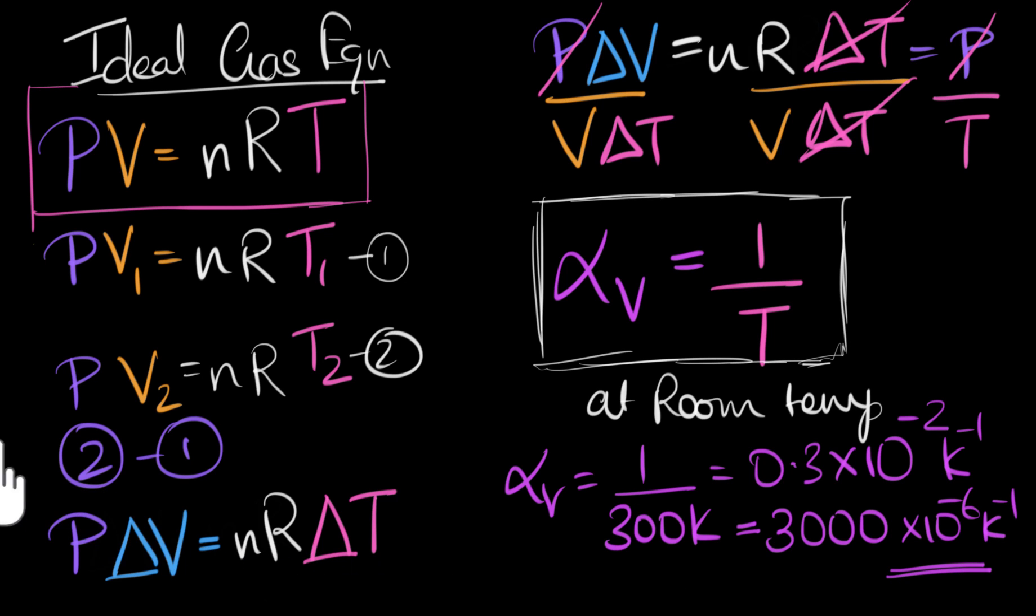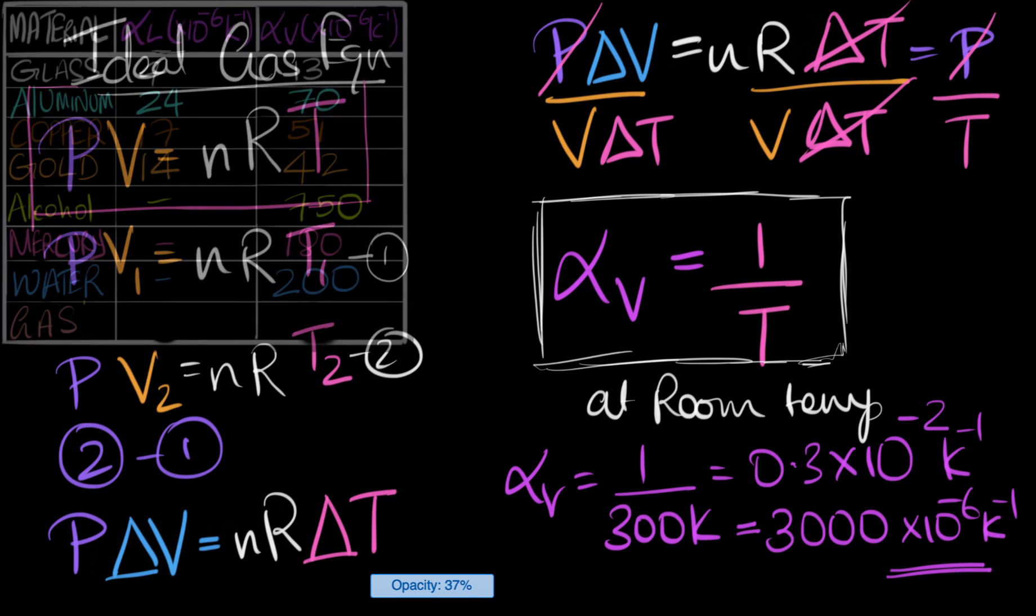Now let's bring back the table. Here it is. We can now fill it up for gas. We get about 3000 times 10 to the power minus 6. And this only works at room temperature, and we have to keep the pressure constant. And that's an approximate value. But anyways, if we compare this value with that of liquids or solids, you see gases are the one that expand the most when you heat them up.